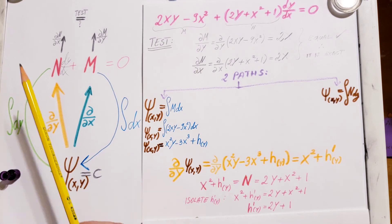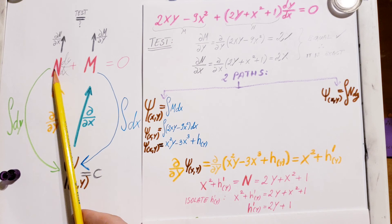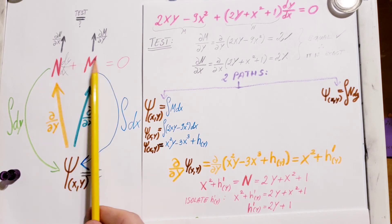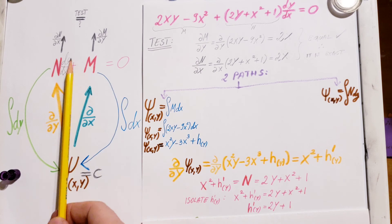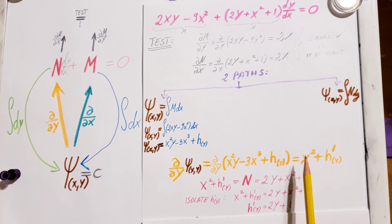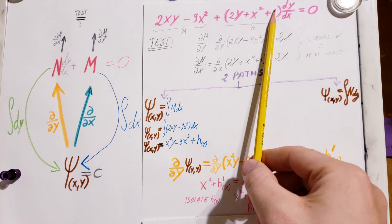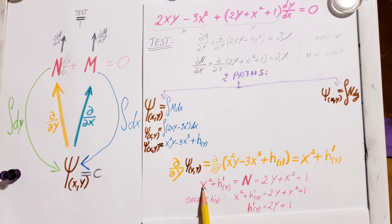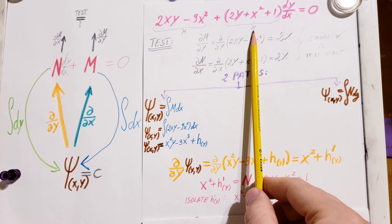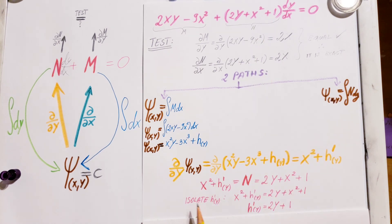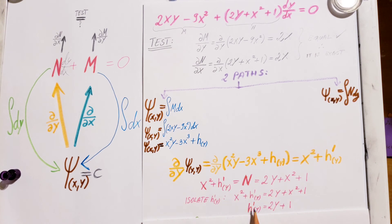Now we realize we've come back to N — this is where we started. We came down and came back up, so whatever we found here is equal to the N we designated. This equals the N from our original equation. Now we isolate h'(y) by putting these two expressions equal and solving for h'(y).